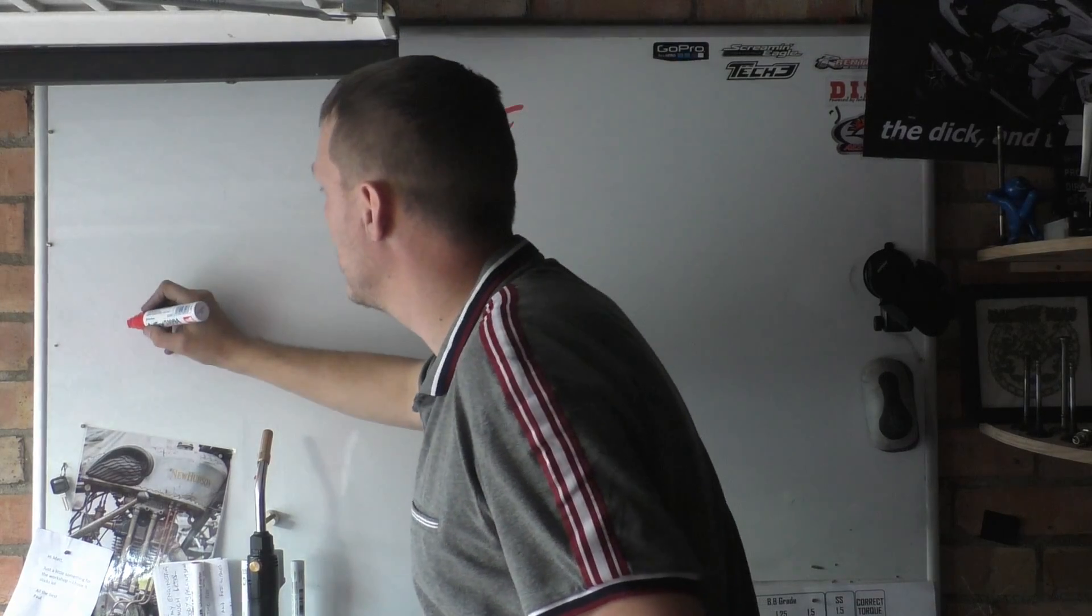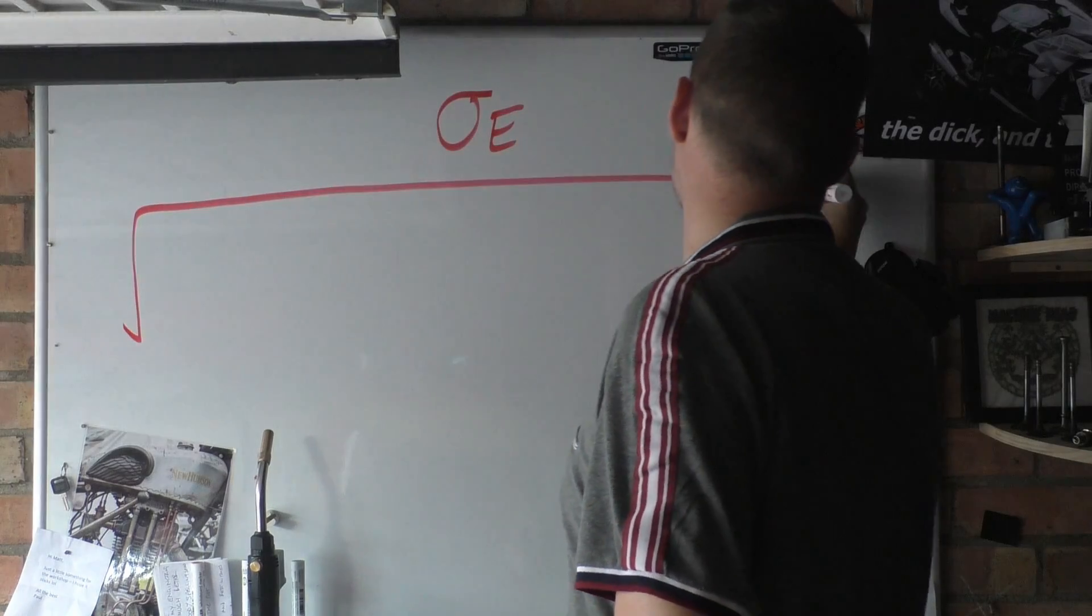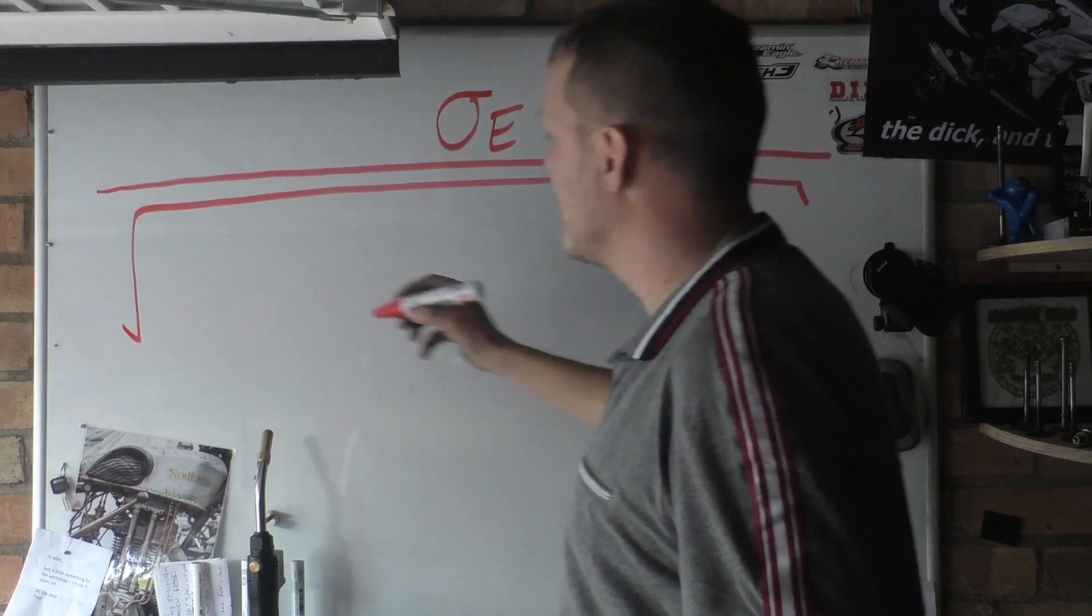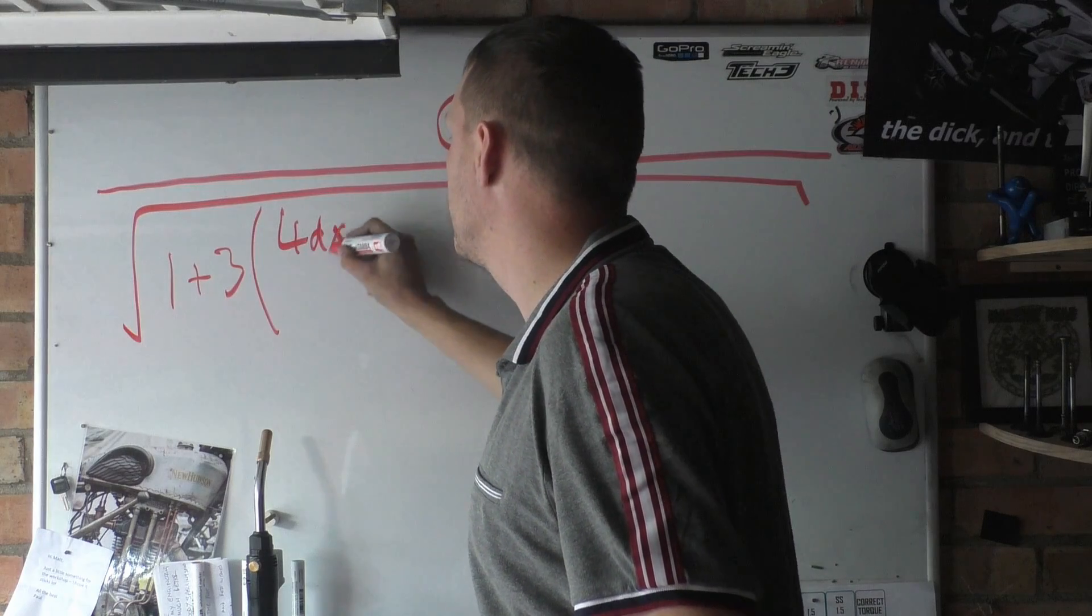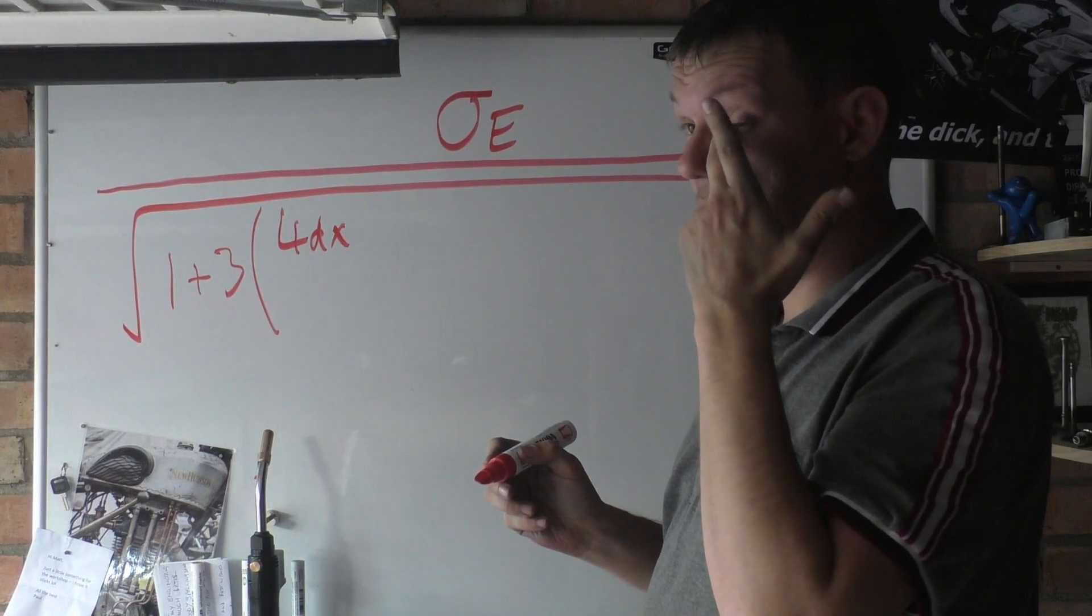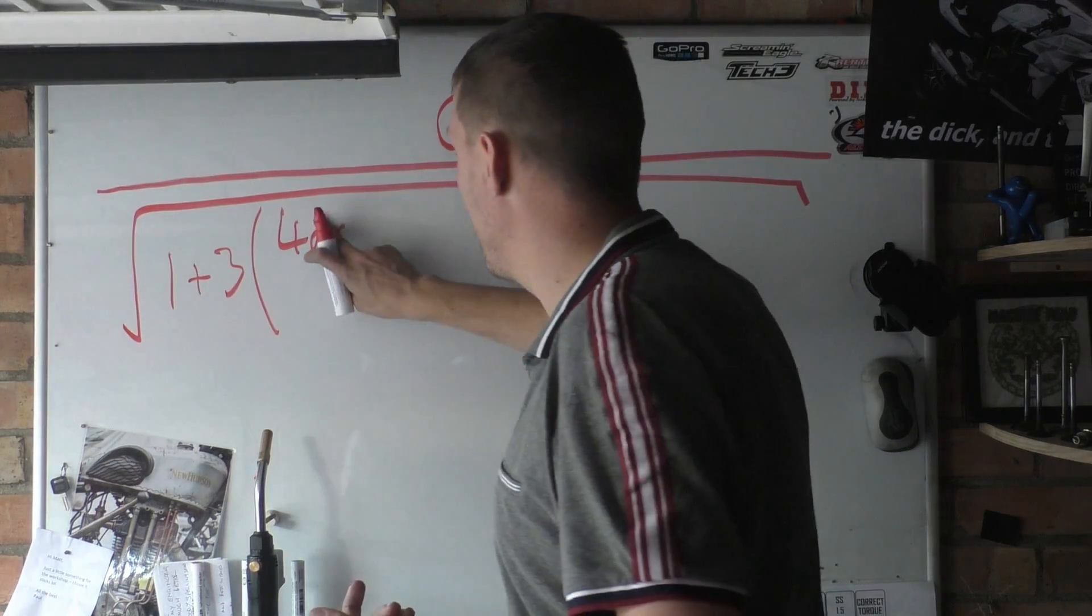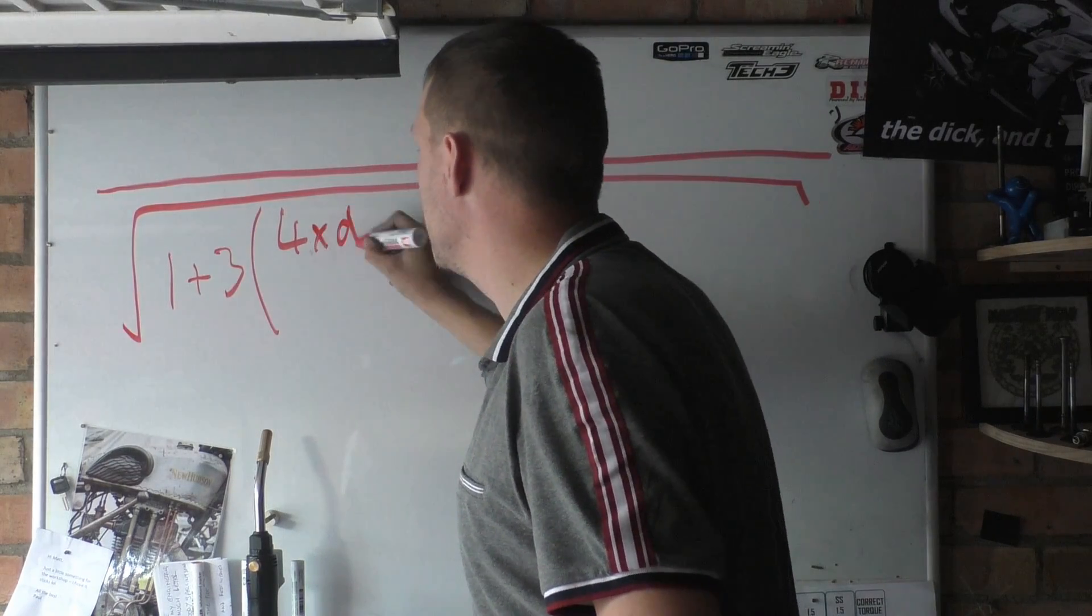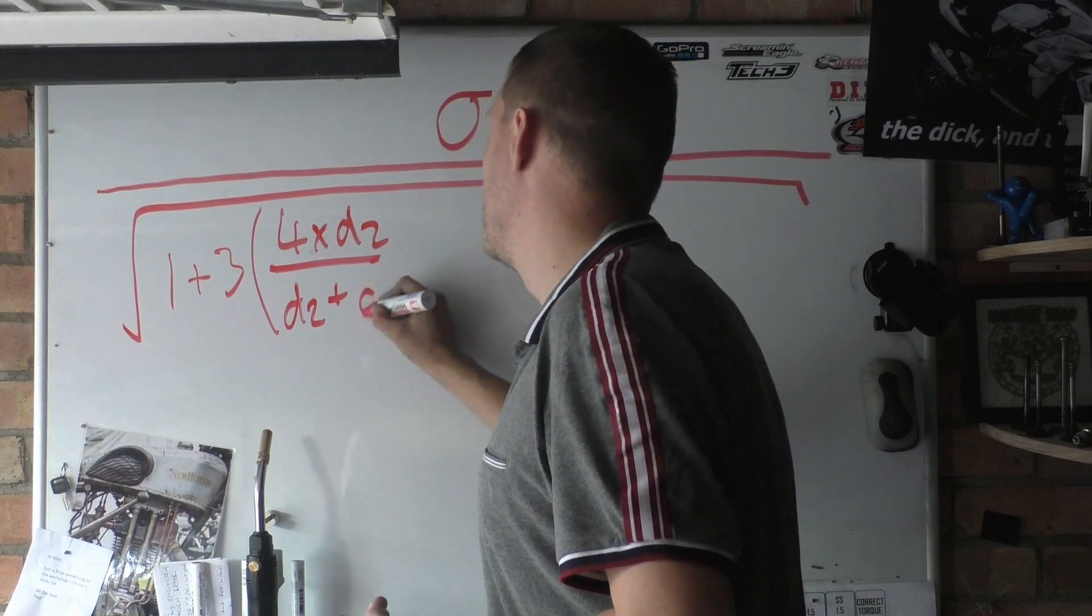So it's our equivalent stress and then it is square rooted and it is divided by, like so, it's 1 plus 3 and then it's 4d times... Oh, I can't fucking remember now. No, it's not 4d, that's what I've gone wrong, you twat. It's 4 times d2 over d2 plus d3.